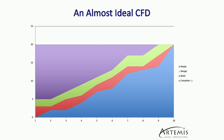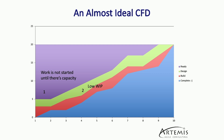Now let's look at what an almost ideal CFD would look like. First, work is not started until there's capacity, so we're going to have a lot of things marked as ready and not started until we have the ability to actually work on them. Number two, we have low WIP — low work in progress. What we want to do is limit the amount of work we are doing at any given time to just a small number of items. Multiple studies have shown over the decades that lower work in progress means higher throughput — more items completed during the course of the sprint. We focus our efforts on completing a few things and then moving on to the next. Low WIP is incredibly important for getting good flow of work through your teams.